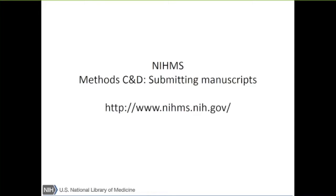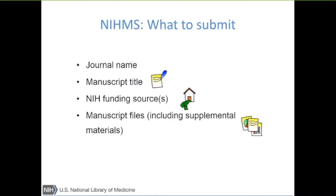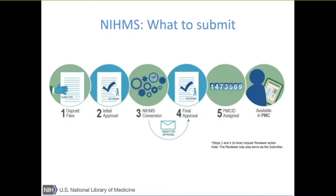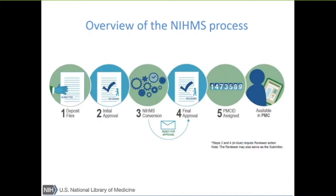Submitting to NIH Manuscript Submission System is relatively painless. You just have to tell us what journal accepted it for publication, give a manuscript title, how it was funded through the NIH funding, and the files themselves including supplemental files. It takes about two or three weeks to go through the conversion process, and then we'll contact the PI to say everything looks fine — just take a look for yourself. Once they approve it, we'll load it into PubMed Central and assign it a PubMed Central ID.